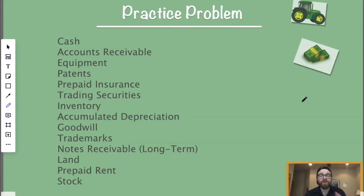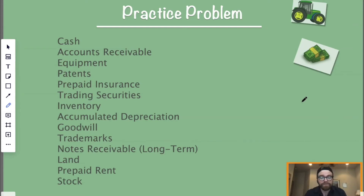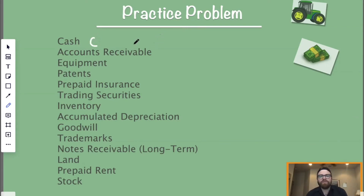Now that you know the different types and categories of assets, let's practice a problem where we'll put it all together. I've listed out many different types of assets and we're going to categorize them as either current, investment, property plant and equipment, or intangible asset. The first one — cash — is current. Accounts receivable: we're going to receive this usually within one year, so we can convert it into cash within one year, which means it's current.